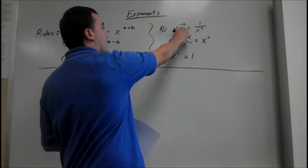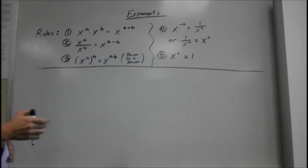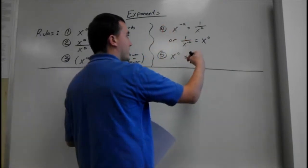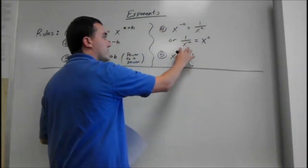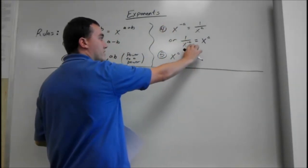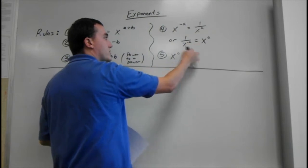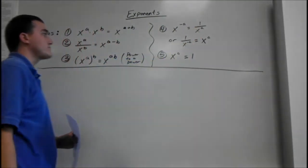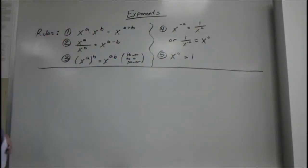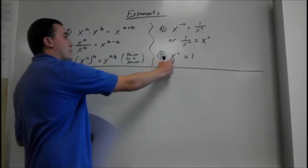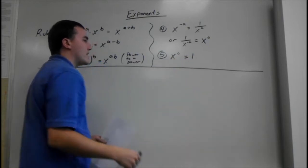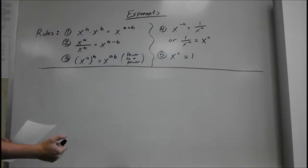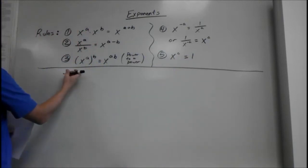If you have a negative exponent, then you flip it. Same for if it's on the bottom and it has a negative exponent — you flip it, put it up top. And anything to the power of zero is one. I'm going to explain why these work this way as well.